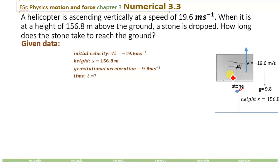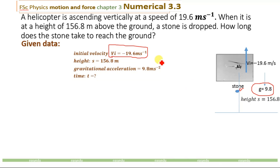The given data from the numerical is that the initial velocity is equal to minus 19.6 meters per second. Why have I taken this initial velocity as negative? This is because the acceleration — which is the gravitational acceleration acting on the stone — is downward. The initial velocity of the stone is equal to the initial velocity of the helicopter, and the helicopter is going upward, so there is a difference of direction between the acceleration and the initial velocity. The initial velocity Vᵢ and the acceleration have different directions.